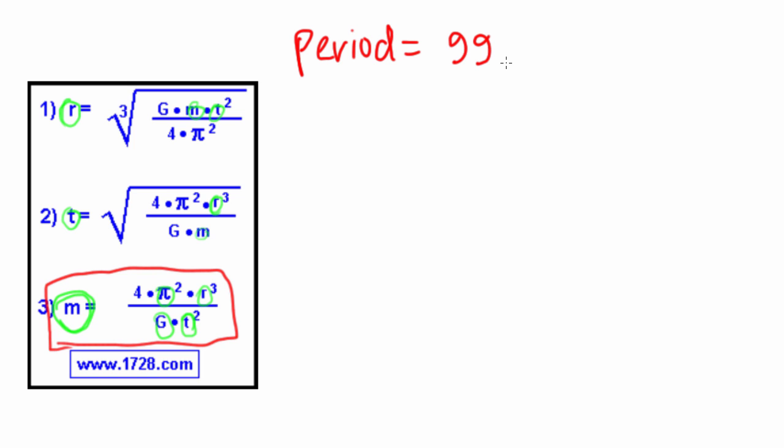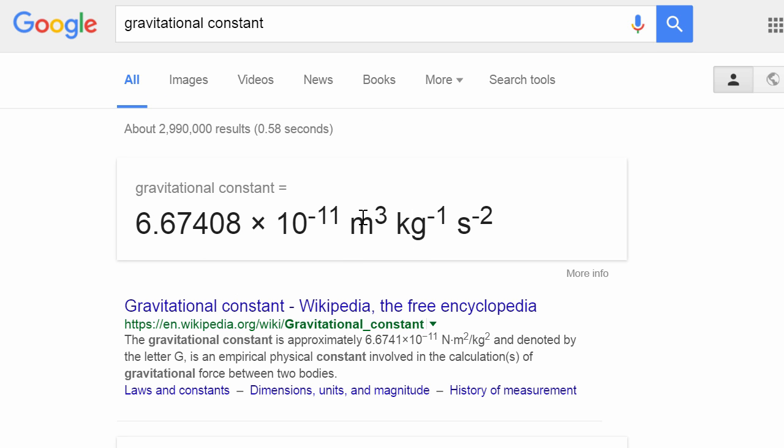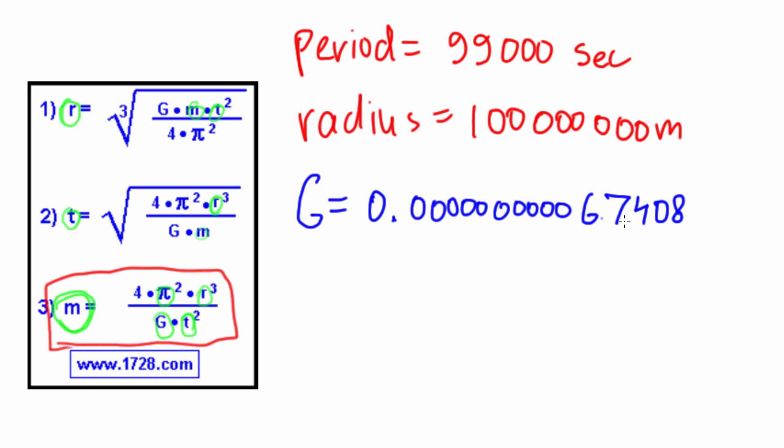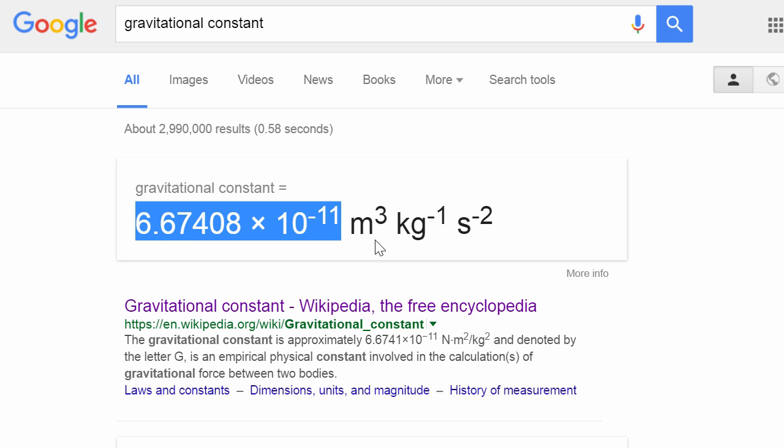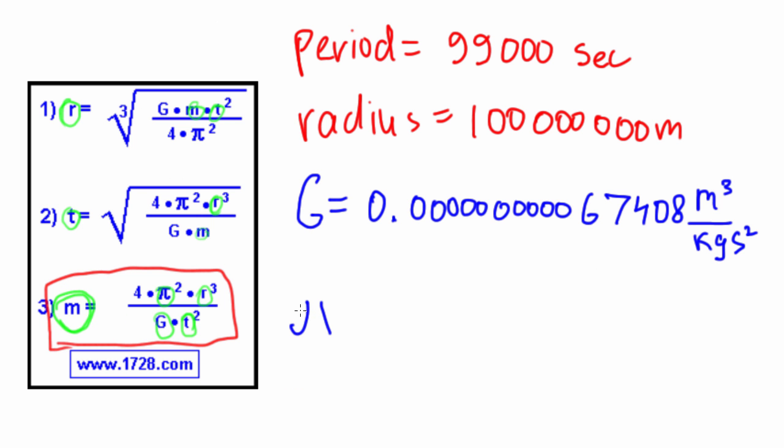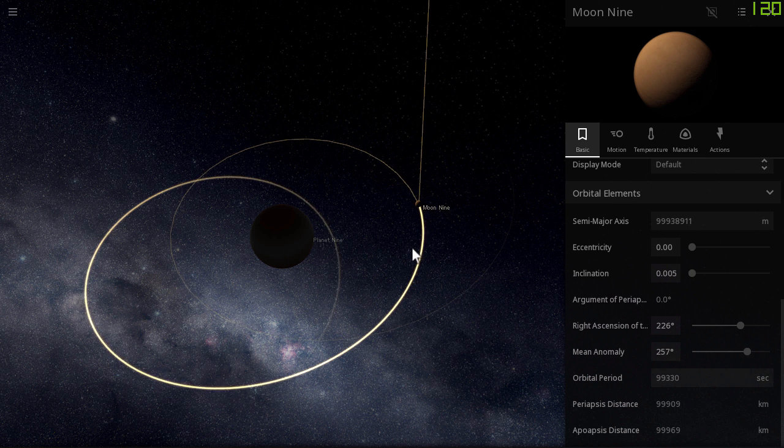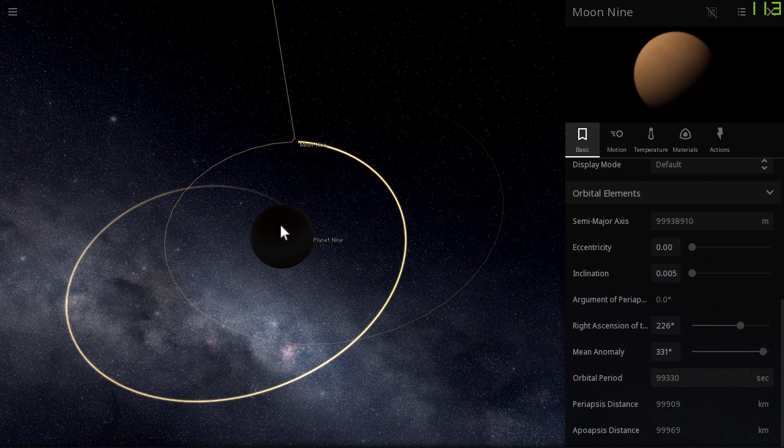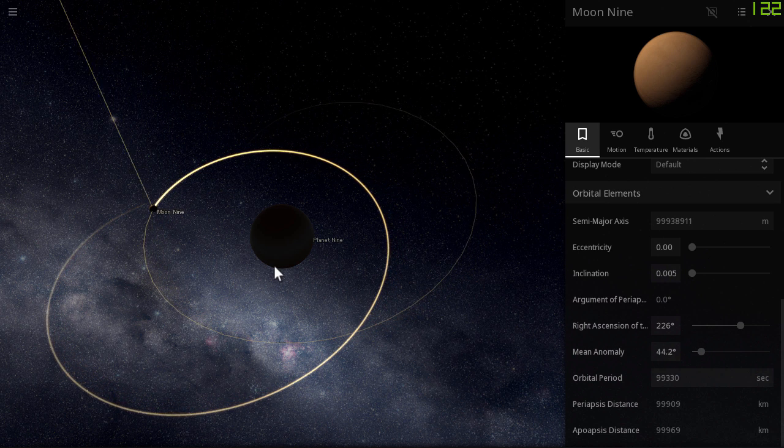Let's write this down. We have 99,000 seconds, approximately. And the radius here will be approximately 100,000,000 meters, because we need to convert kilometers into meters, since the gravitational constant has meters, kilograms and seconds as its unit. So this has to be using the same unit. Now we write down the gravitational constant: 0.0000000067408, and the unit here was meters cubed divided by kilograms divided by second squared. Then we have pi. Both of these are constants. And pi, we'll take the approximate value of 3.14. That's all we really need: two constants and two values that we calculate by measuring how long it takes for moon 9 to orbit around planet 9 and by finding the approximate radius.